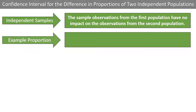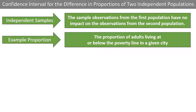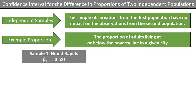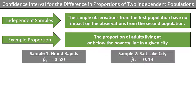Let's say we are interested in the proportion of adults living at or below the poverty line in a given city. We may have sample 1, which reveals that 0.2 or 20% of Grand Rapids adults are at or below the poverty line, and a second sample that reveals that 0.14 or 14% of adults in Salt Lake City are at or below the poverty line. We assume these samples are independent, as they came from different cities and should not affect each other in any way.